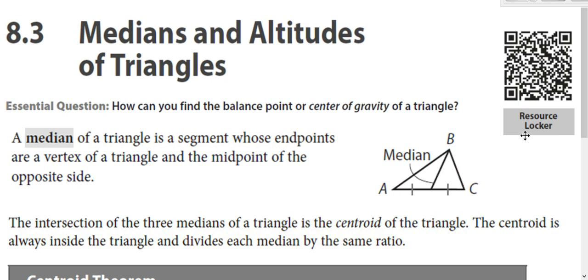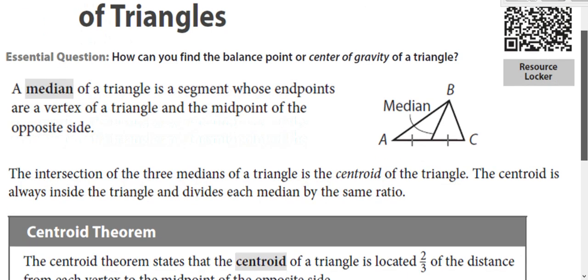We're going to look at medians in particular, not so much with altitudes. A median goes from a vertex to the midpoint on the opposite side. So down here, that's the midpoint, which means that line — you could call it D. BD is a median there. It goes from the vertex to the midpoint.